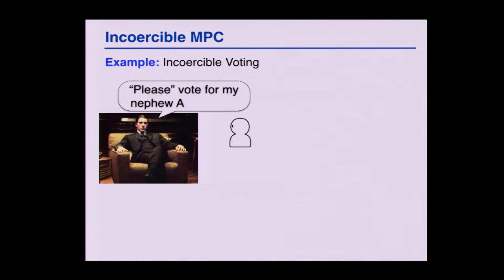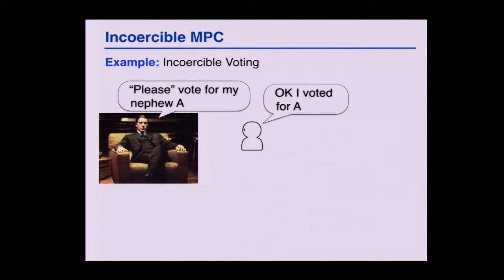To give you an example, let's look at the prototypical scenario of incoercibility: voting. You have a Don who goes to a voter and says, 'Please vote for my nephew A.' The voter is really brave and doesn't like A, so he goes in the booth and votes for B. He goes back and says, 'OK, I voted for A.' He can pull this off in a standard election because he does everything in the booth — there's no trail. But if this is an electronic voting protocol, then the transcript of the protocol is a proof of what he voted in most protocols. So if the boss says 'prove it, show me your transcript,' then he's in trouble.